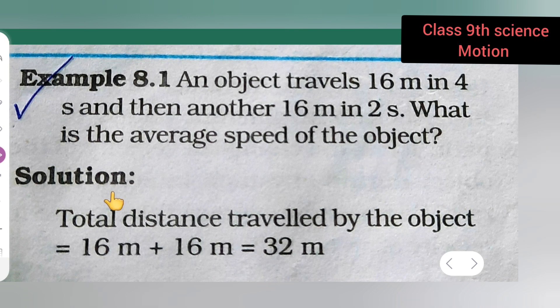Solution: The total distance traveled by the object will be 16 meters plus 16 meters, so it will be total 32 meters. What I am doing is adding these two numbers.